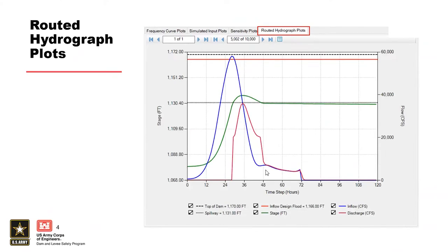What's really neat is that you can actually scroll through every single routing that happened in your simulation and examine what was selected. Just like most of the plots we've looked at, the plot shows the inflow hydrograph in blue, the outflow hydrograph in red, and the stage in green. That can help interpret the results.